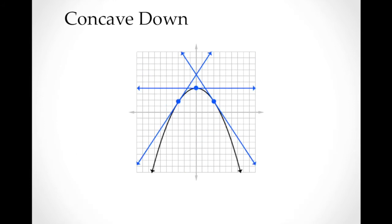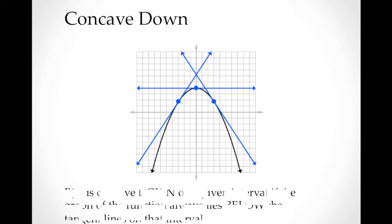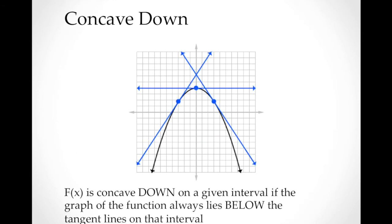The second one is concave down. The function is concave down on a given interval if the graph of the function always lies below the tangent lines on that interval. For example, this parabola — you may draw a line tangent at any given point, and notice that it will always be concave down at any value of x.